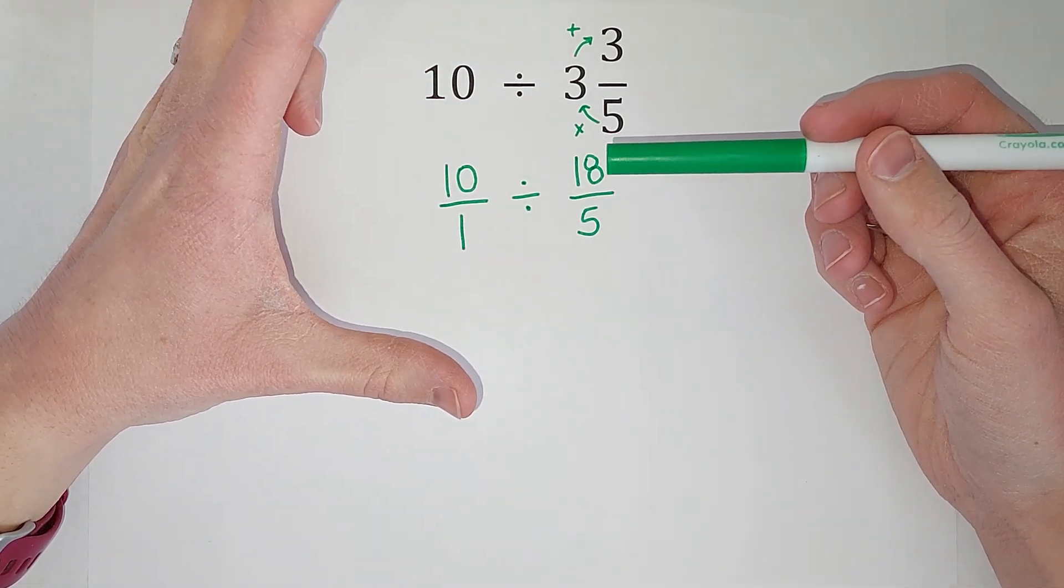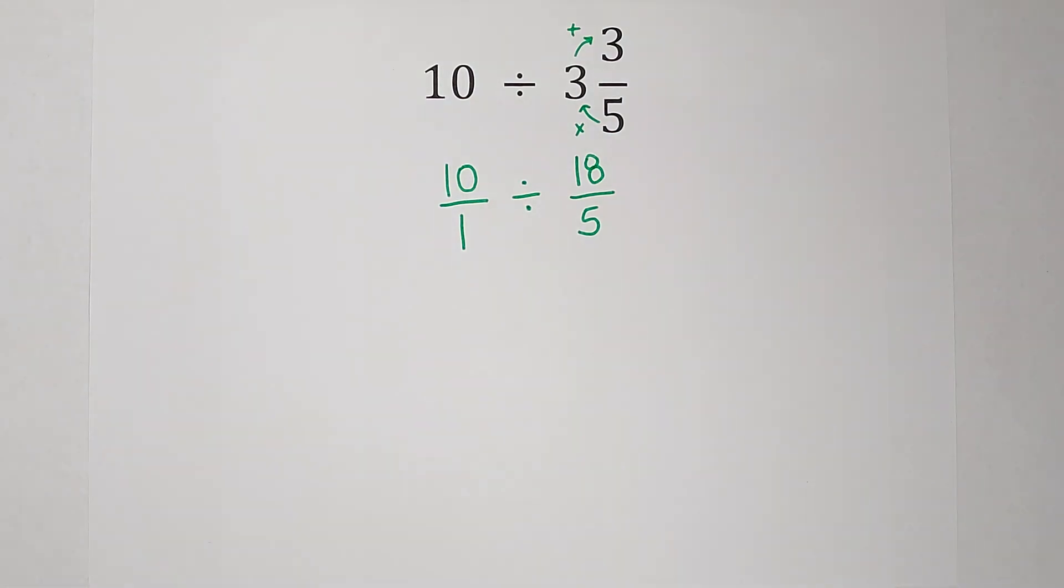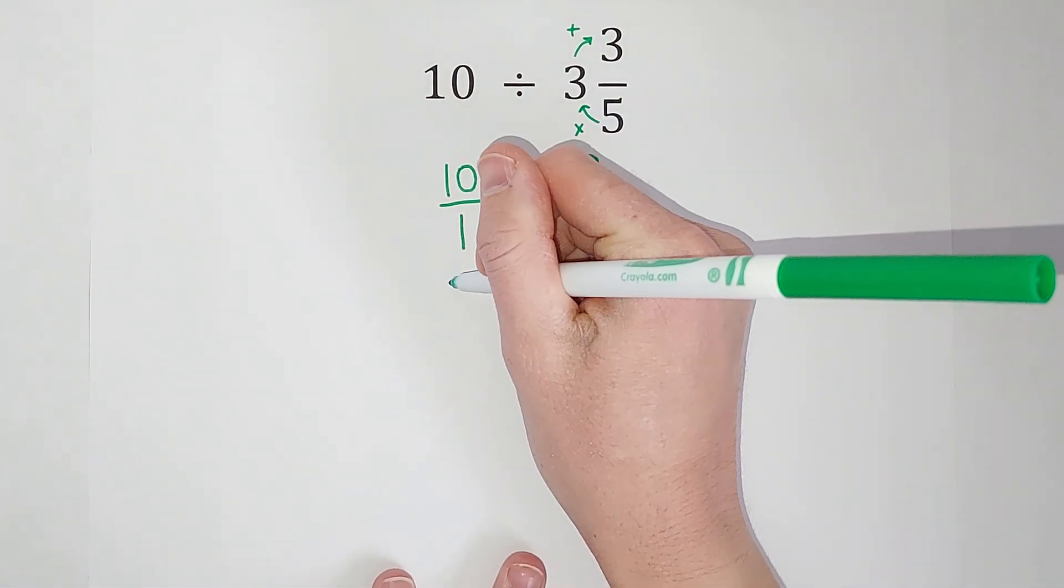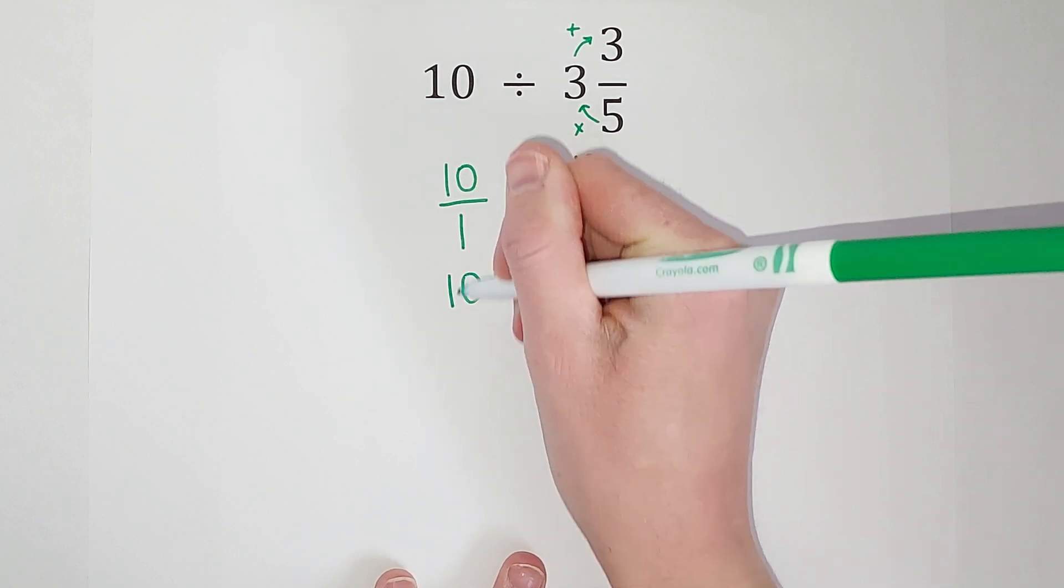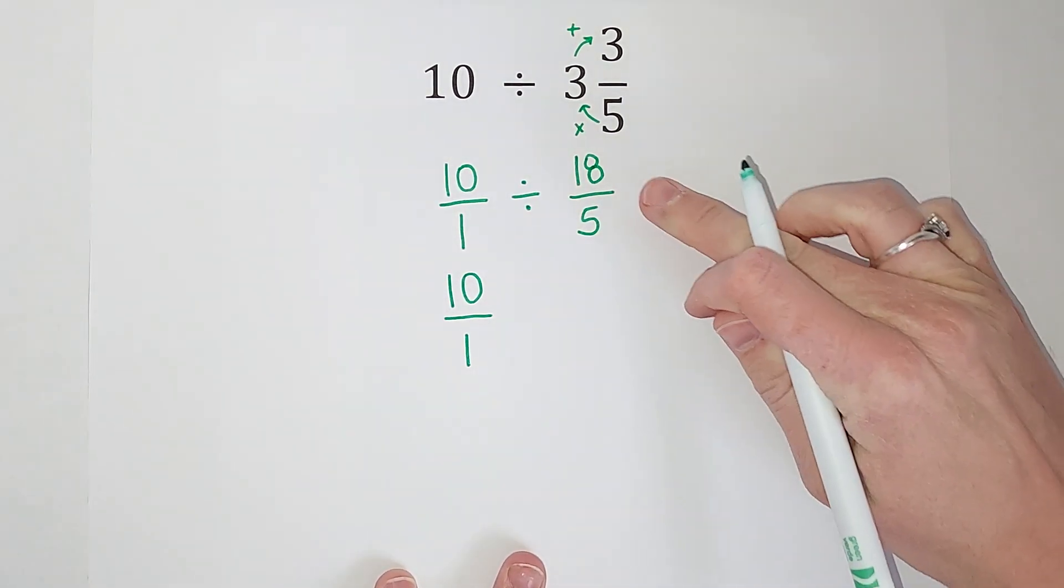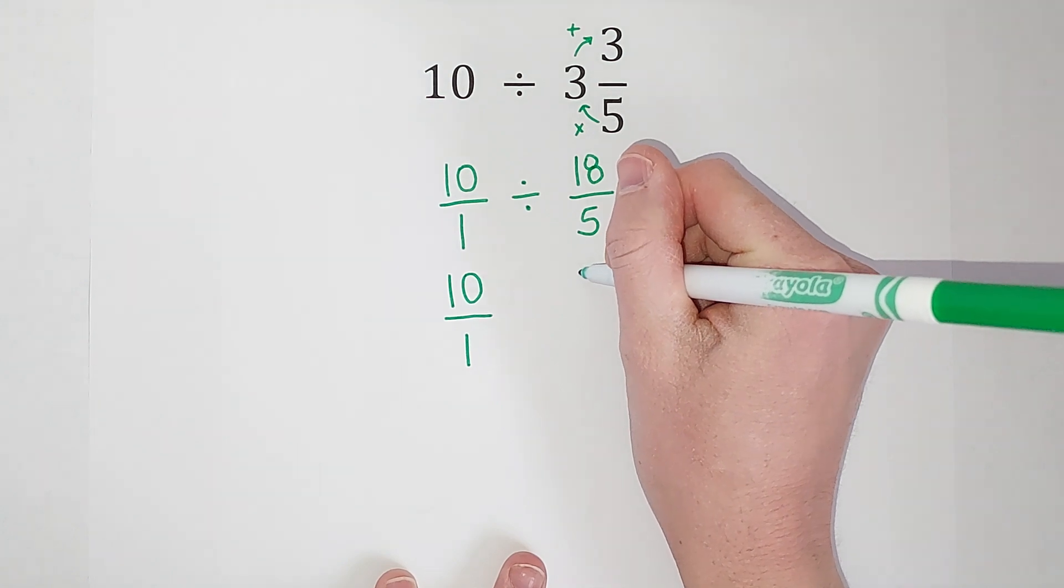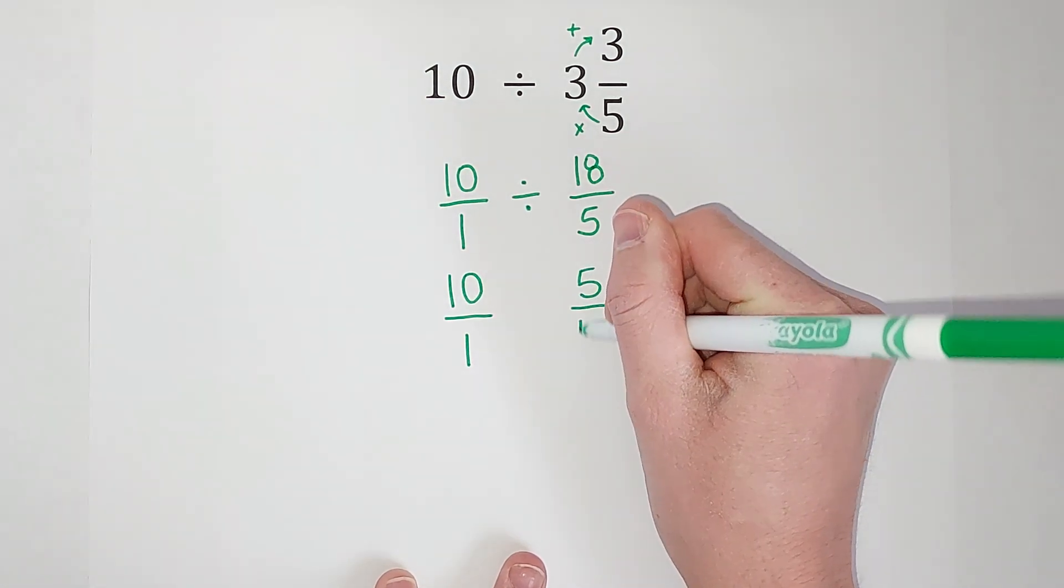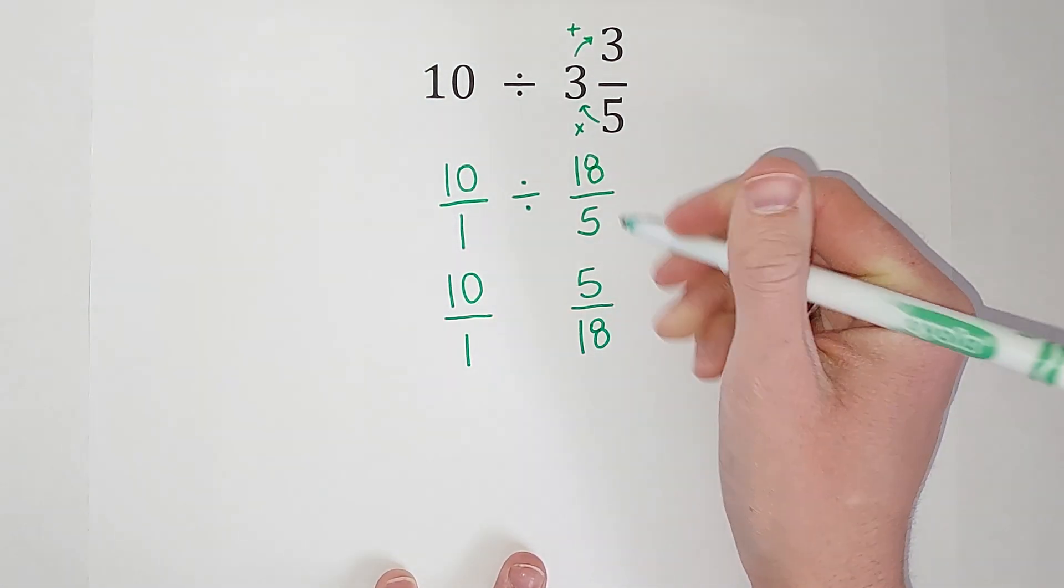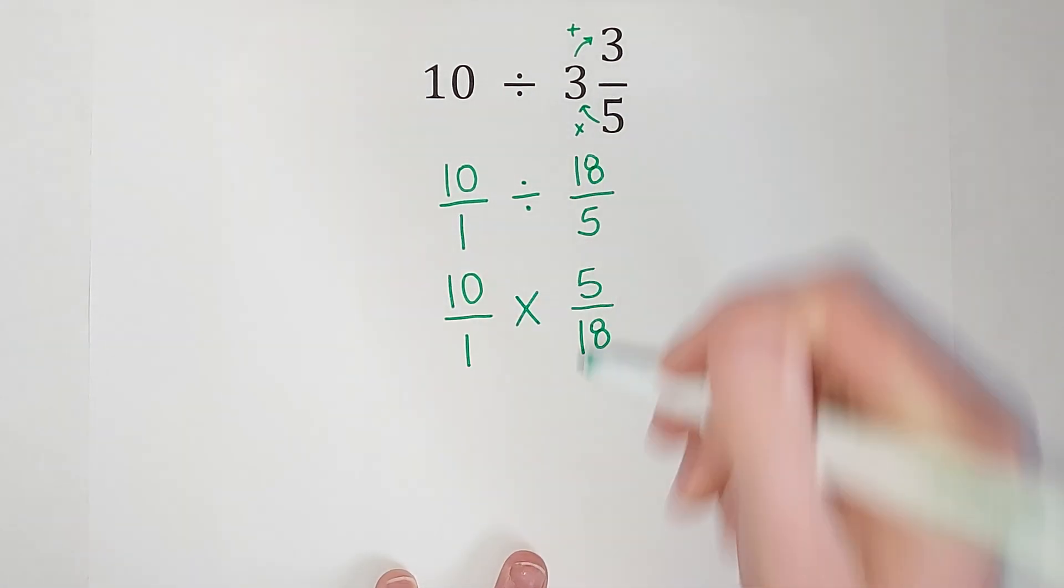Does that sound crazy? I'll link a video in the corner explaining why this works if you're interested. So I'm going to take my first fraction, 10/1. My second fraction, I'm going to flip. So it's going to be 5/18, and then we are going to multiply.